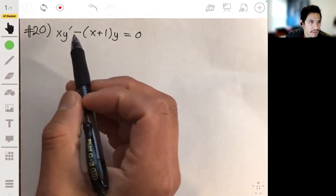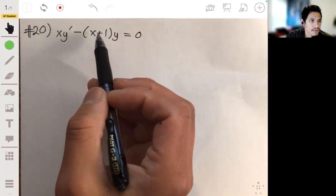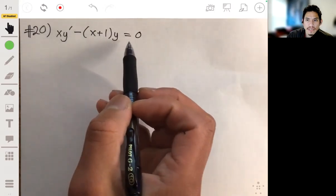All right, so here we have the differential equation xy' minus a group of x plus 1 times y being equal to 0.